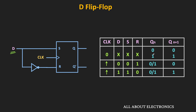Now at the clock transition, when this D input is equal to 0, then S is 0 and R is 1. In this case, irrespective of the present state of the flip-flop, the flip-flop will get reset — that means its output will become 0. Similarly, when D input is equal to 1, then S is 1 and R is 0. In this case, irrespective of the present state at the clock transition, the output of the flip-flop will become 1.